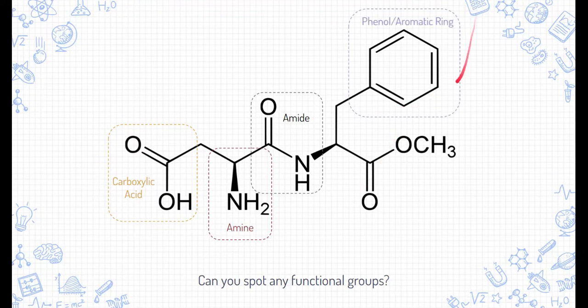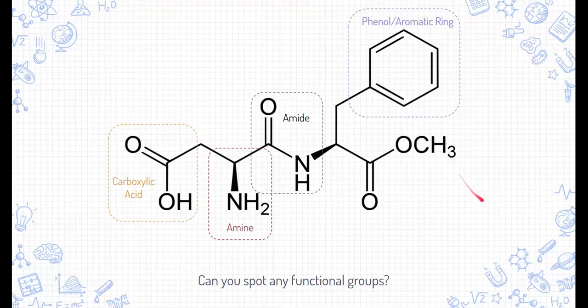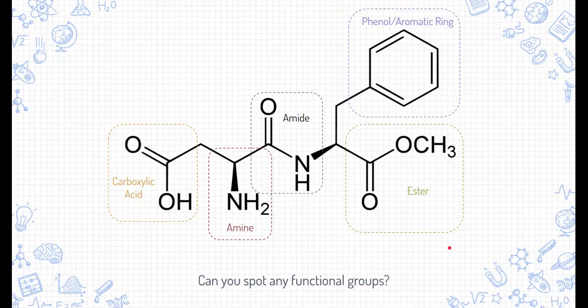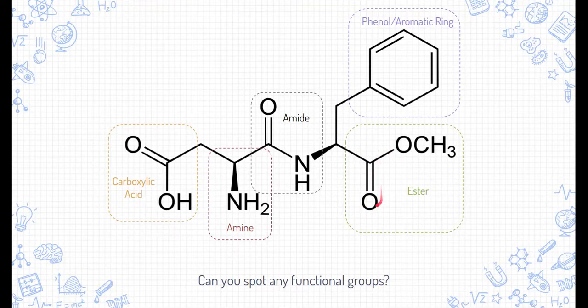Up here, you might instantly recognize this aromatic ring. This is phenyl right here. And then the last one on the bottom right is an ester. This is the carbon-oxygen double bond. And then there's an oxygen with another R group right over here with a CH3.